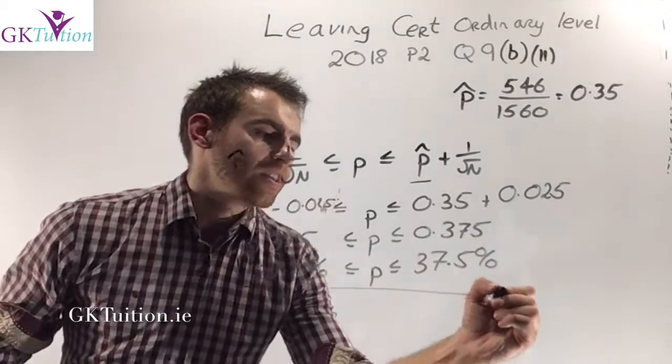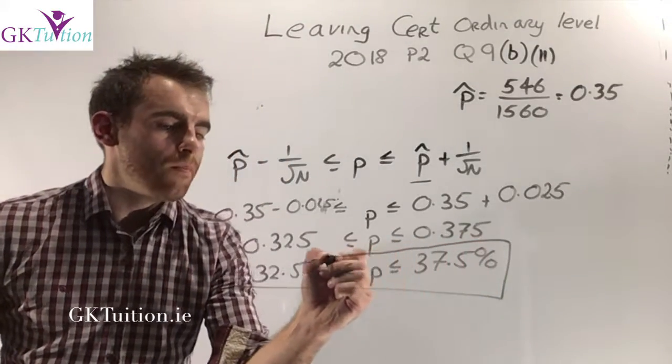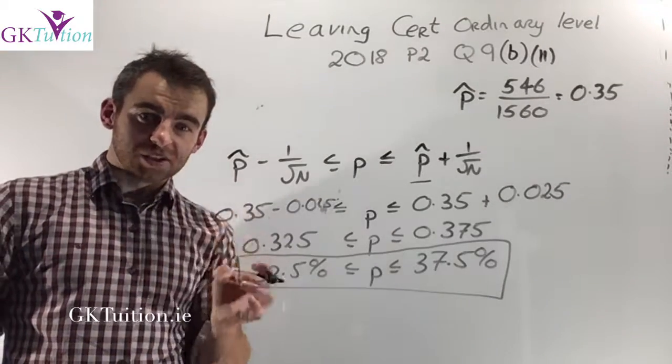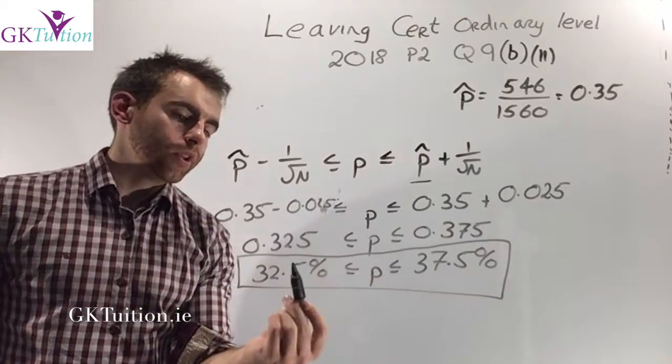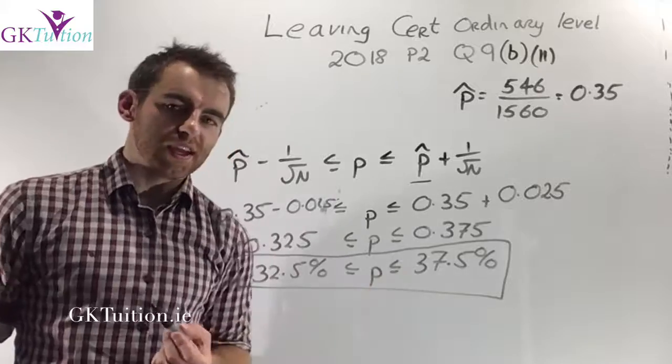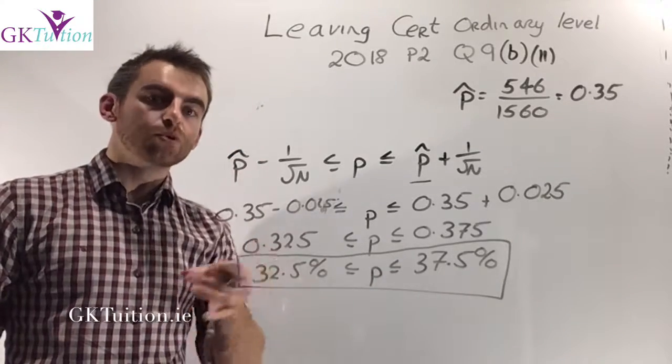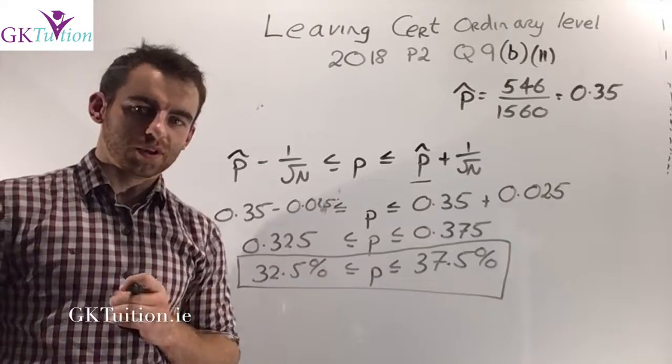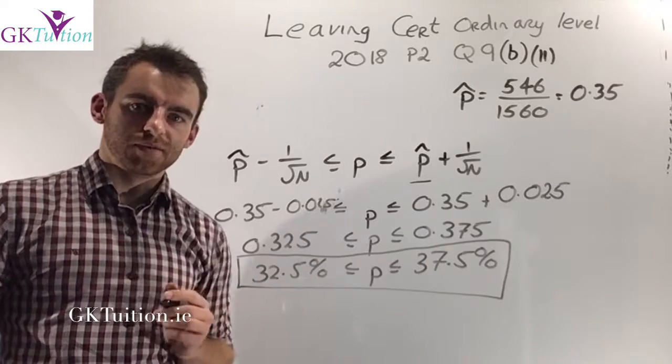I can conclude that if 35% of my sample enjoyed the show, I'm fairly certain that if I actually surveyed the 1 million viewers, between 32.5% and 37.5% of those 1 million people would have enjoyed the show. And what I have in my box here is my confidence interval.